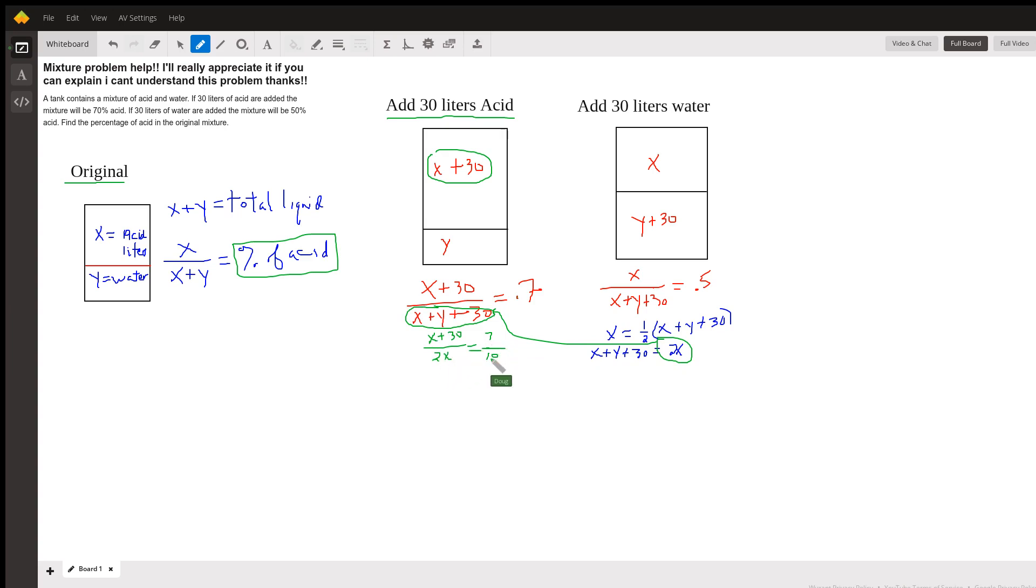I've got one equation and one unknown, cross multiply, solve for x, and I'll have the amount of acid in the original container. Put that number in for x in one of these two equations, solve for y, and then this is your final calculation.